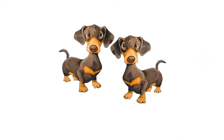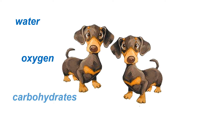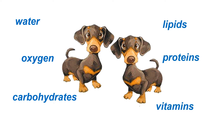Animal cells need a constant supply of nutrients such as water, oxygen, carbohydrates, lipids, proteins, and vitamins. They must also eliminate waste products like carbon dioxide and nitrogen-containing compounds. But how is it possible for this to take place?